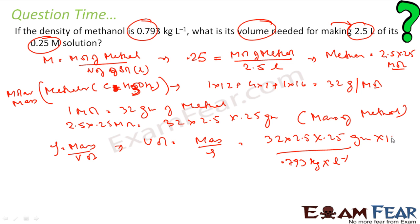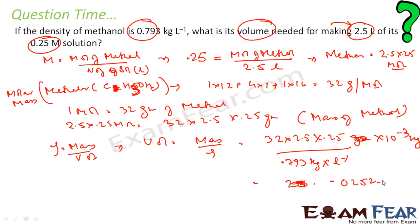I will convert grams to kg by multiplying by 10⁻³, so both become kg and I get volume in liters. If you solve this, you get approximately 25.2 mL. So the volume of methanol needed is 25.2 mL.